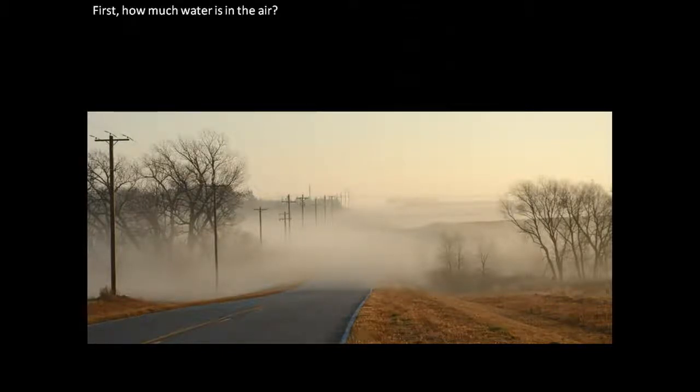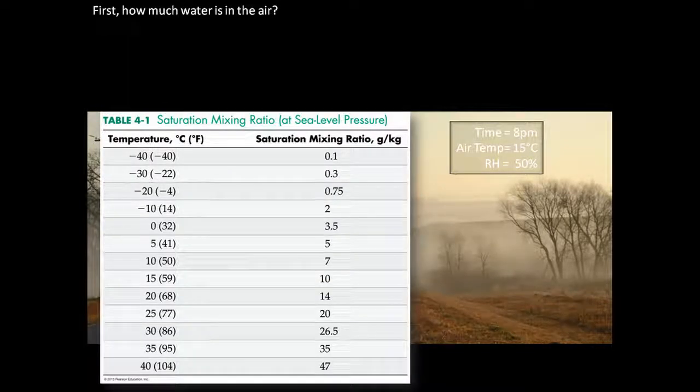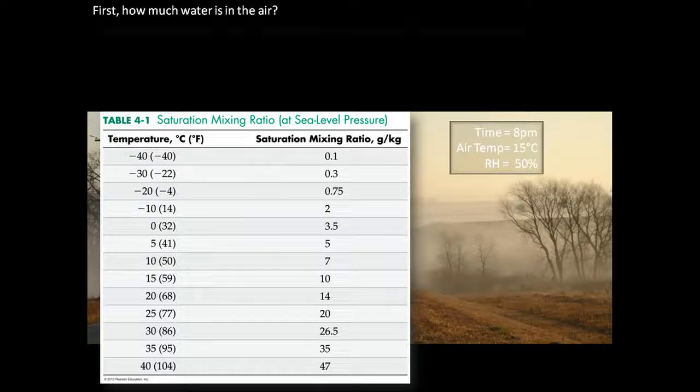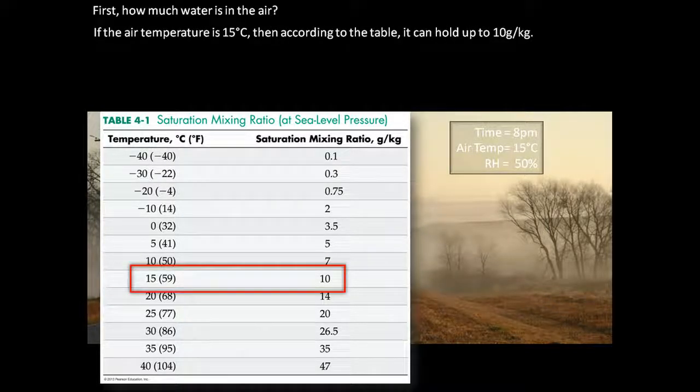First, we need to know how much water is in the air. To figure that out, we need to look at our saturation mixing ratio table. We've already been told that the air temperature is 15 degrees Celsius and the relative humidity is 50 percent. If the air temperature is 15 degrees Celsius, then according to the table, it can hold up to 10 grams of water per kilogram of air.